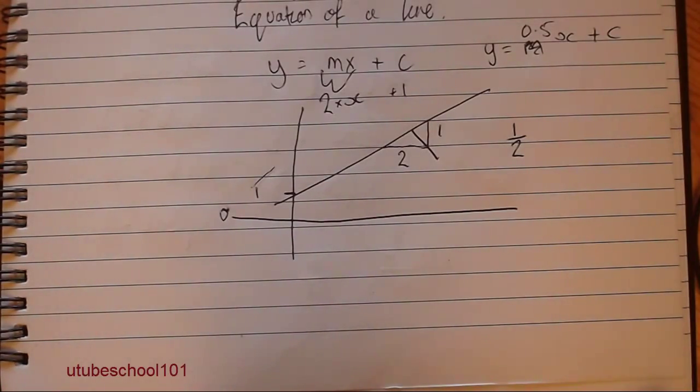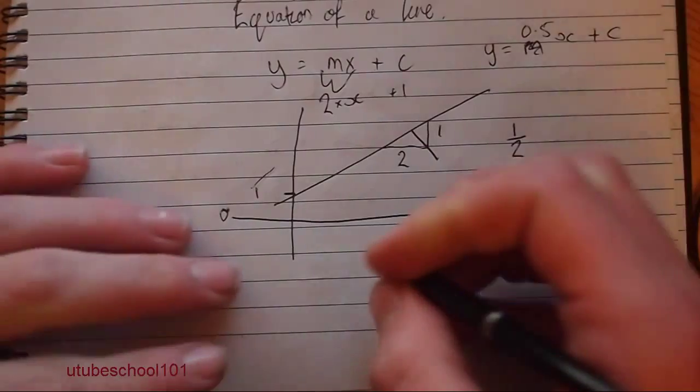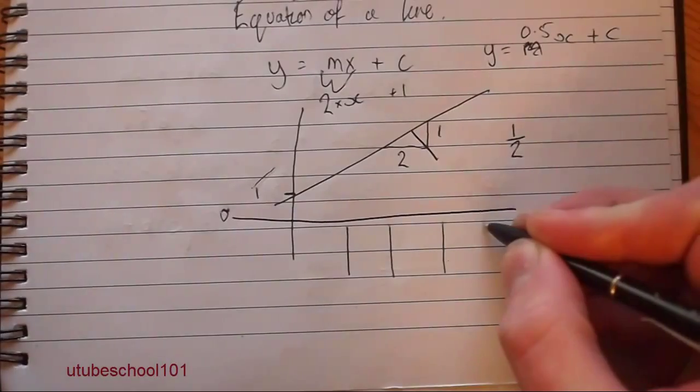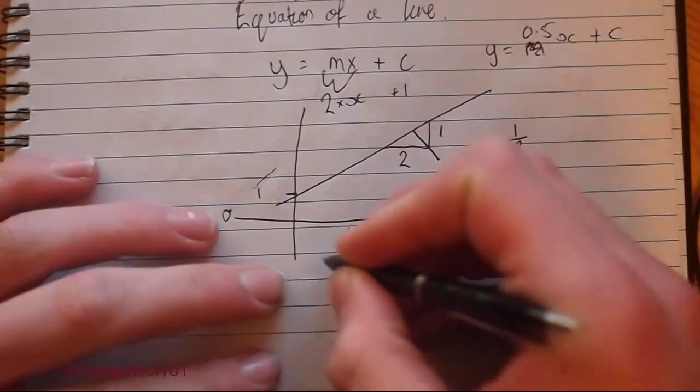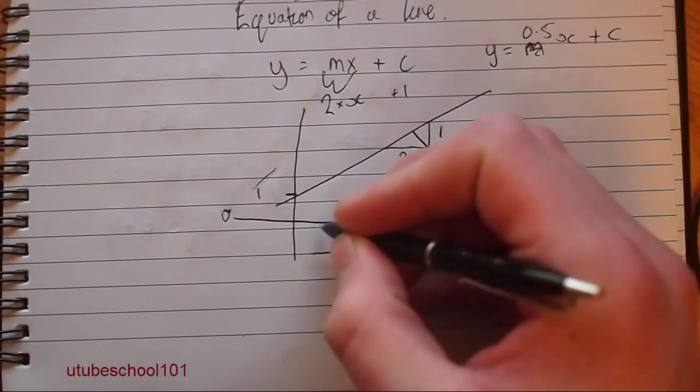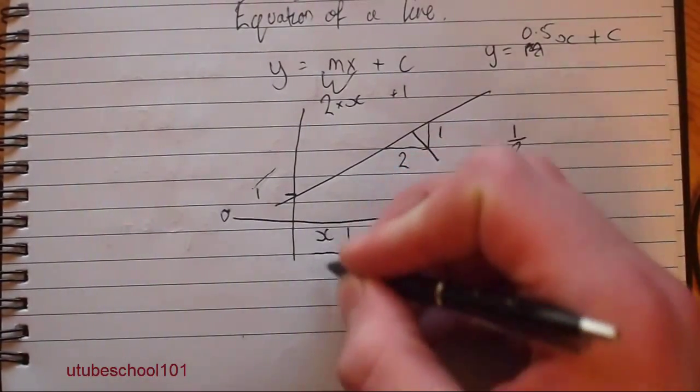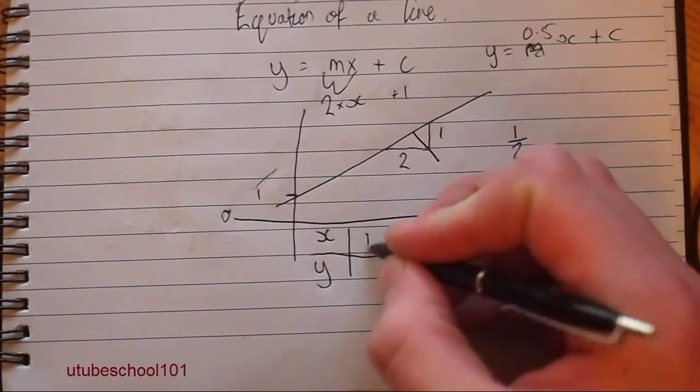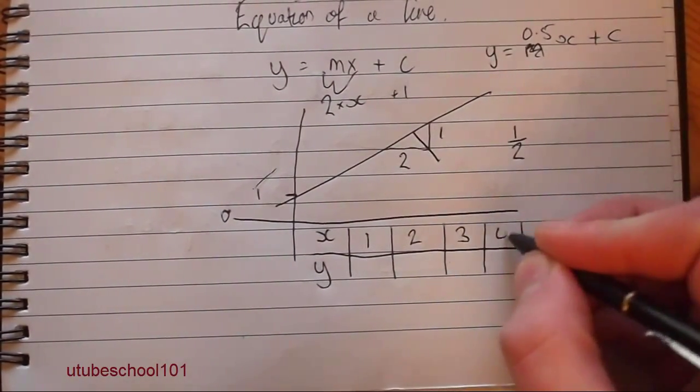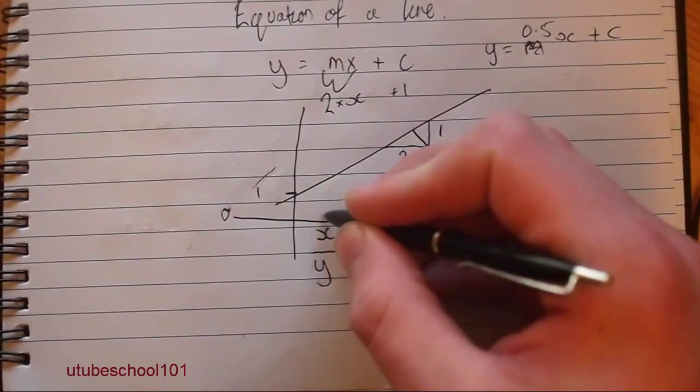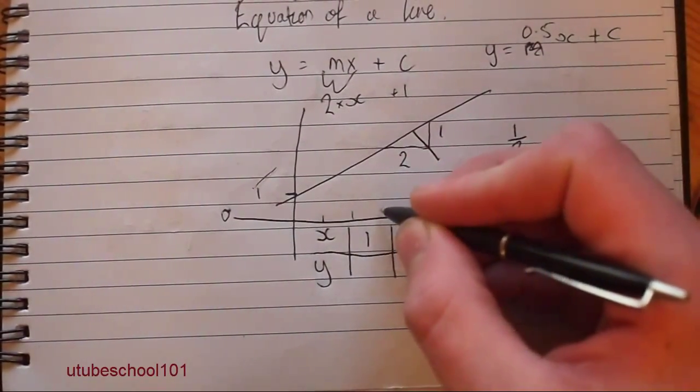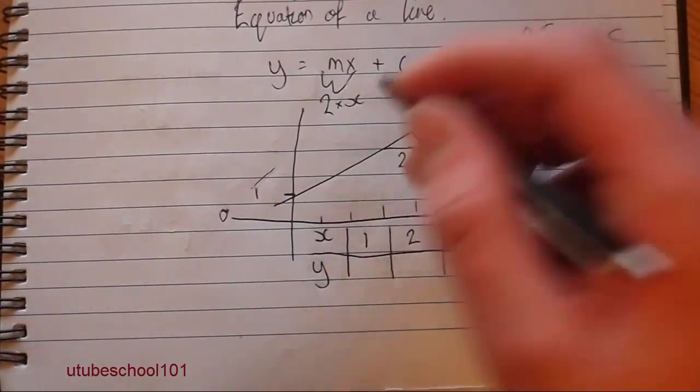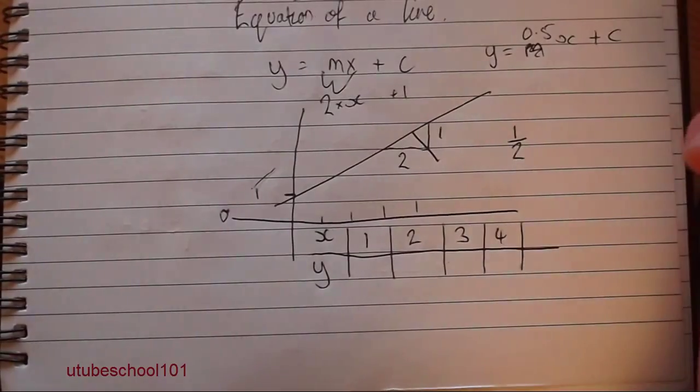So now using this equation, you can plot the values. And when you're first starting out, it's very useful to draw a table. So you just draw a simple table with two rows in, an x-row and a y-row. And then you can just simply write the x values in. Because you're going across here. So 1, 2, 3, 4. Then using this equation, you can work out the y values very easily.